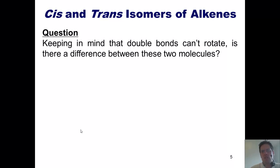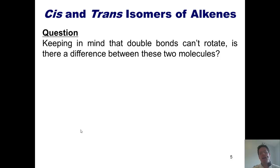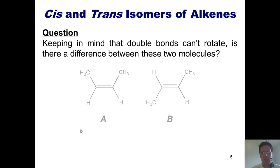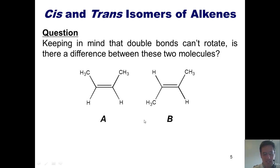I want to teach you the difference between cis and trans isomers in alkenes. Keeping in mind that double bonds cannot rotate as single bonds do, is there a difference between these two molecules? Look at them closely and even pause this and think about it before you go on.